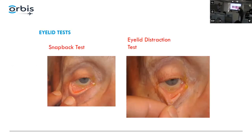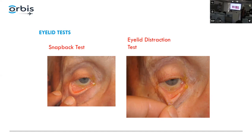There are two eyelid tests I perform. The snapback test: push the eyelid down, ask the patient not to blink — if the eyelid comes up very slowly, that indicates a loose eyelid. The eyelid distraction test: pull the eyelid out; anything more than a centimeter of stretch indicates a very loose eyelid. If positive, doing an ectropion repair will help their tearing and ocular surface.